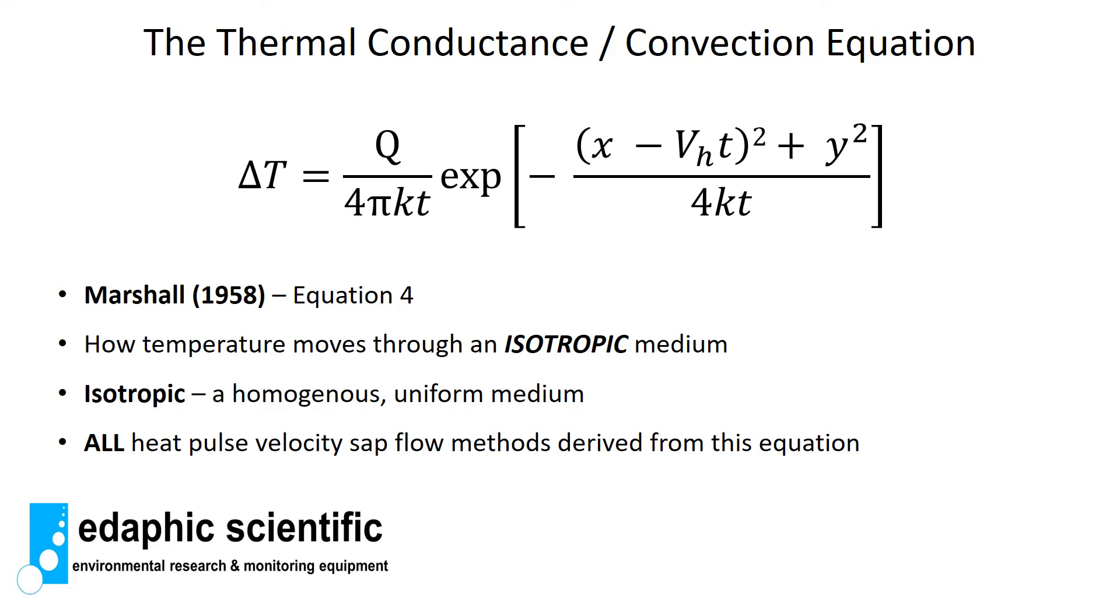All your heat pulse velocity methods are based on this equation. It does look a little bit overwhelming when you first see it but we'll go through it step by step. This equation here is your thermal conductance and convection equation and what it describes is the way heat moves through materials. It's not just the way to describe how heat moves through sapwood, xylem, or plant materials, but the way heat moves through any type of materials. Soil scientists in particular have used this equation to good effect to measure soil thermal properties and soil moisture as well.